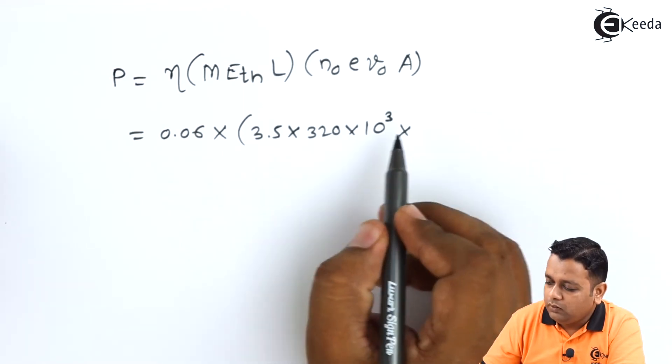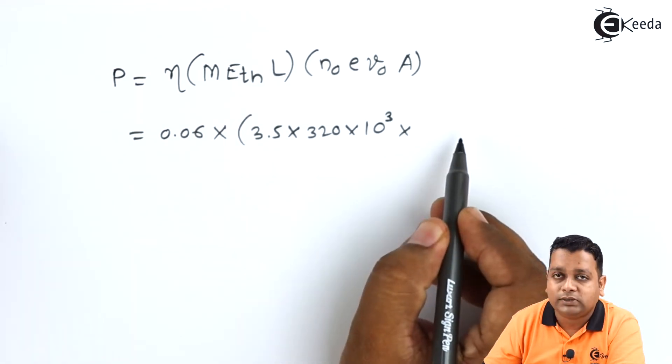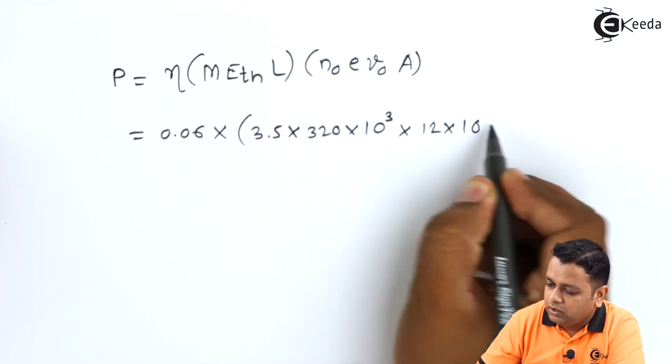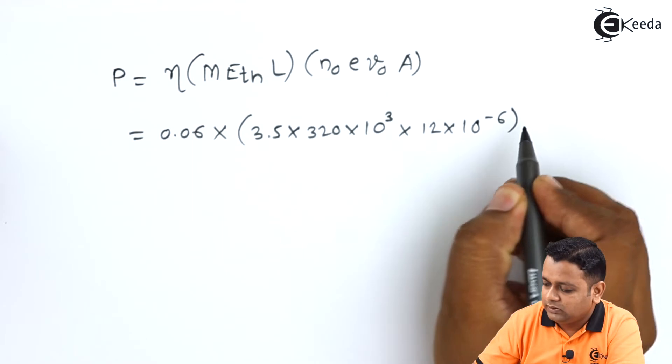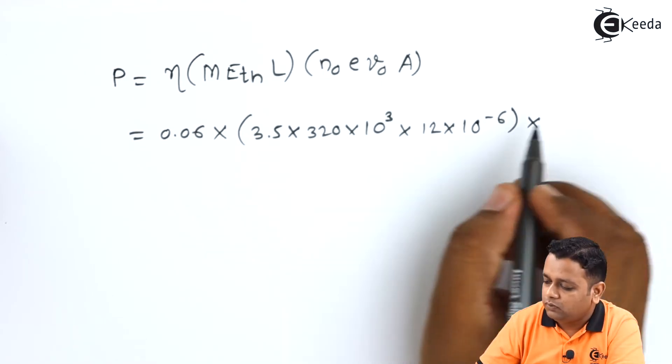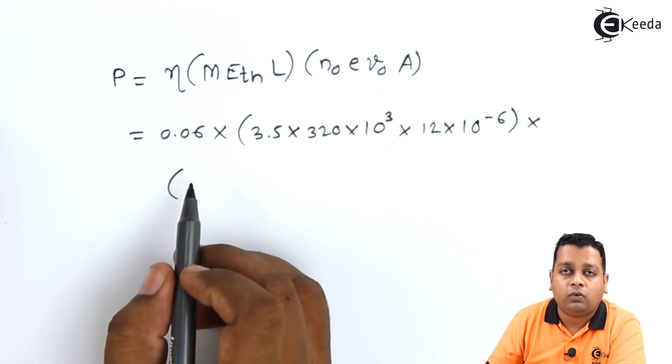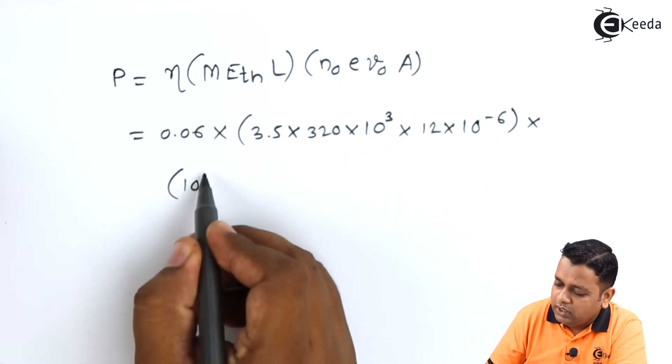Now here we require the device length. The device length L can be substituted with 12 into 10 raised to power minus 6 in terms of meters.